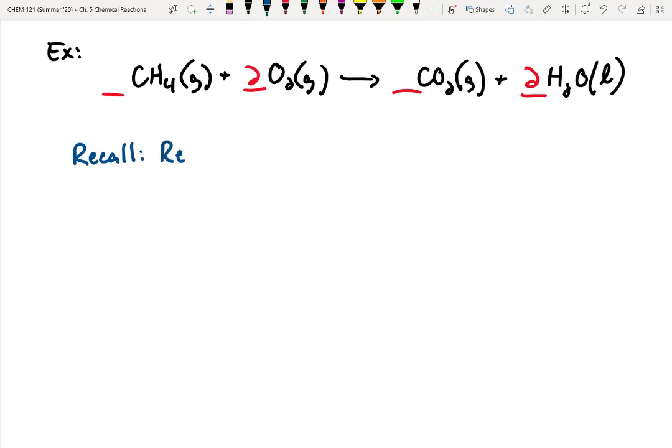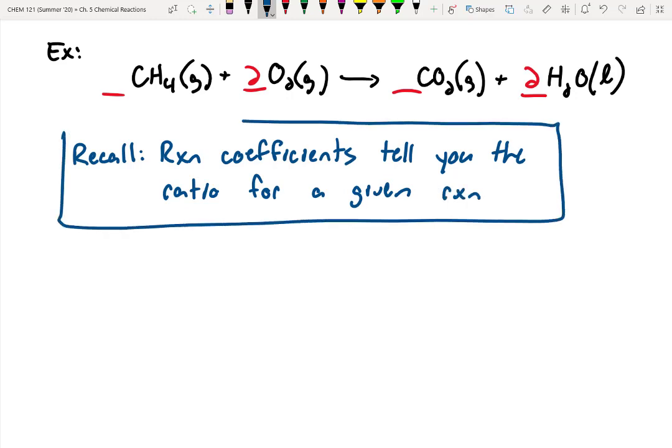I did want to have a reminder that these reaction coefficients are super important. Reaction coefficients tell you the ratio for a given reaction. This is going to become key with stoichiometry. When we look at this, it means for every one molecule of methane that reacts, we have two molecules of O2 reacting to produce one molecule of CO2 and two molecules of water. We need to know this. Without balancing this reaction, we're going to get the wrong answer.